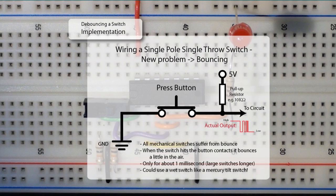Now that we have our circuit we need to deal with the bounce. When a button is pressed it bounces in the air giving an actual output like that shown in red in the figure. All mechanical switches suffer from bounce only for a short amount of time. We could use a mercury tilt switch or some other closed switch, a switch that wipes or swipes, or we could solve this using additional circuitry. In this video I'll look at debouncing a single pole double throw switch using an SR latch. In the next video I'll explain how to debounce a single pole single throw switch using an RC pair and a Schmitt trigger.